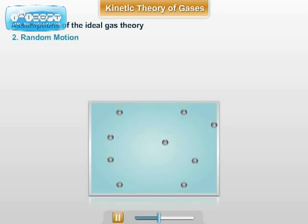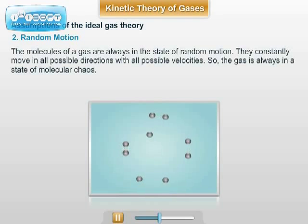2. Random motion: The molecules of the gas are always in the state of random motion. They constantly move in all possible directions with all possible velocities. So, the gas is always in a state of molecular chaos.